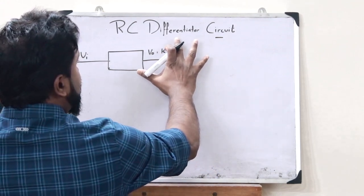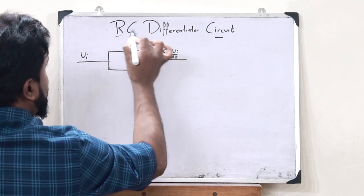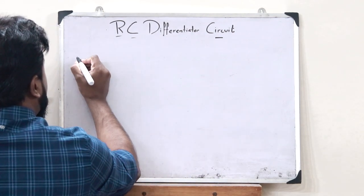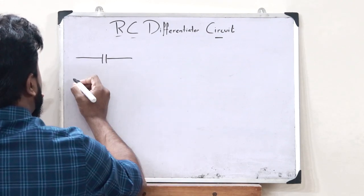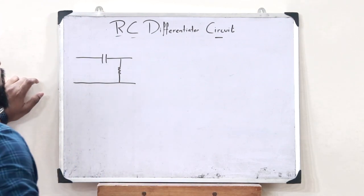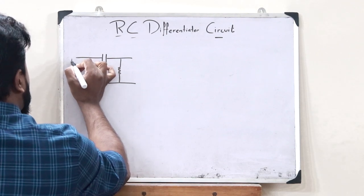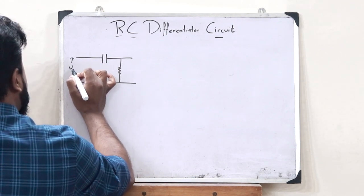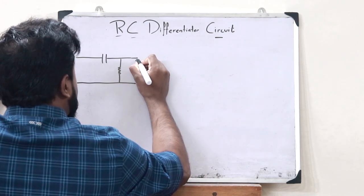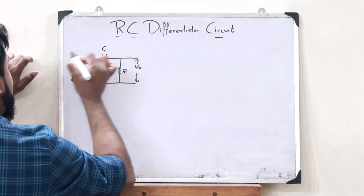Here we are going to construct a differentiator circuit using RC components — that is, using a resistor and a capacitor. First we take a capacitor, and then we connect a resistor. So here we have a capacitor as well as a resistor. We give an input voltage Vi, and we should obtain an output voltage V0 across this particular resistor.